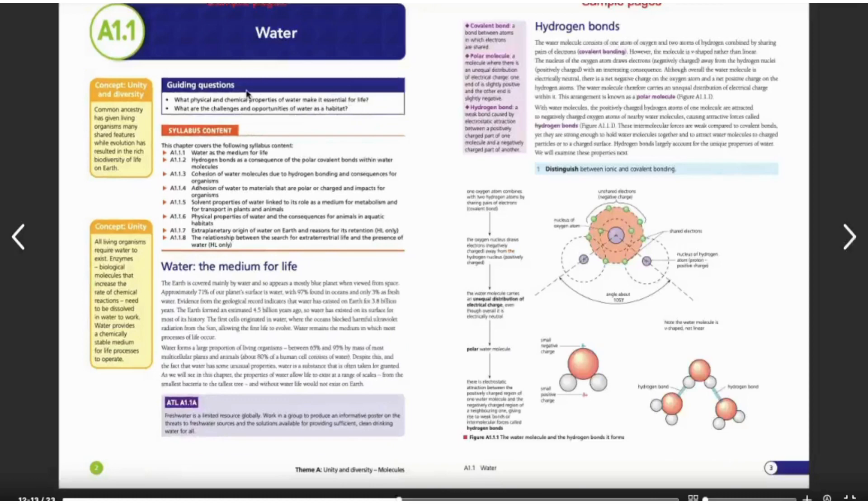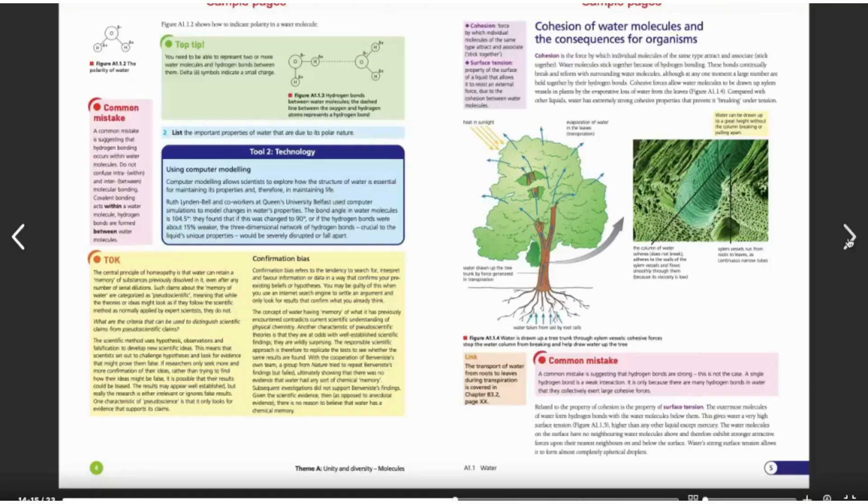Now let's see how the first chapter actually looks like. The first chapter starts with water. Here we have the guiding questions, syllabus content that shows what it's really important to get out of this chapter, the concept of unity and diversity, as well as key terms such as covalent bonding, polar molecule, and hydrogen bonds. It gives an explanation overall if you don't know certain parts of the chapter.